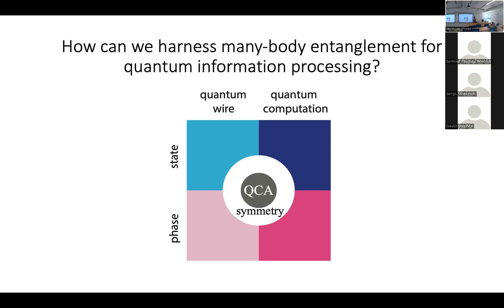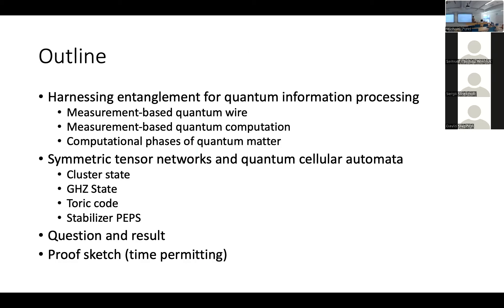In the middle we have two overarching themes that have proven very useful in understanding this phenomenology: quantum cellular automata (QCA) and symmetry. The symmetry bubble is bigger than the QCA bubble because QCAs are in a sense contained within the symmetry bubble — QCAs are associated with certain symmetries, but not all symmetries are associated with QCAs.